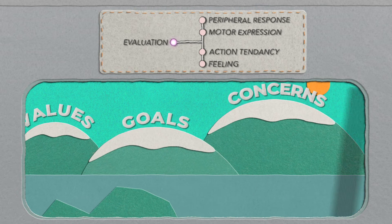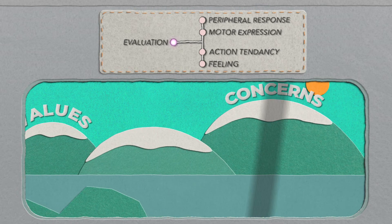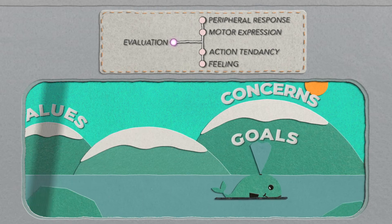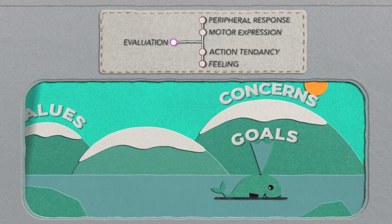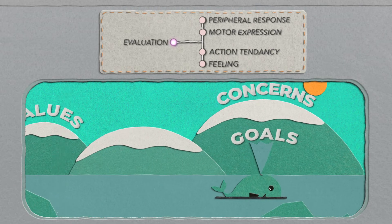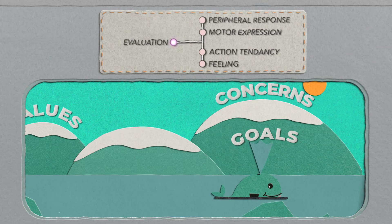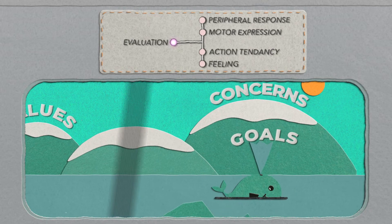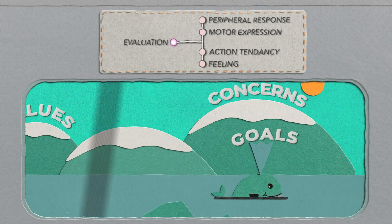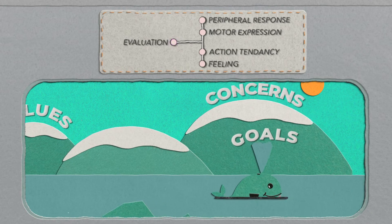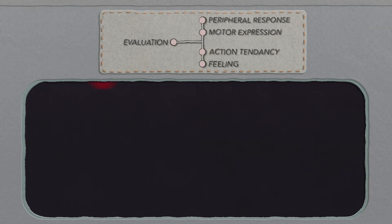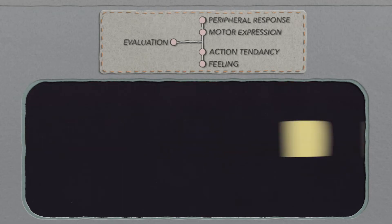Does it stop us from achieving our goal? Or does it help us to achieve them? In one case, we will have a negative emotion. In the other, it will be positive. Emotion therefore has a triggering event. This component is particularly interesting because it explains why the same event triggers such different emotions in different individuals.